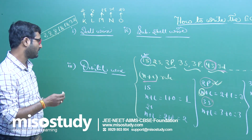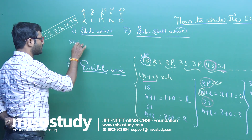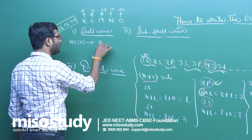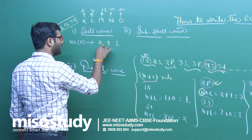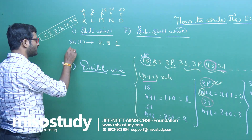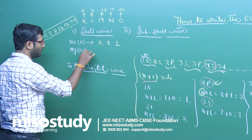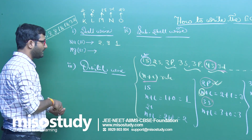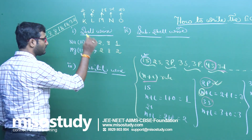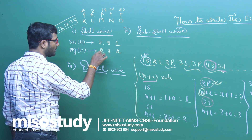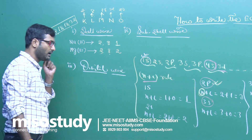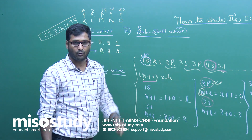Now cell-wise, if anyone asks you to write the electronic configuration of sodium: K has 2, then L maximum 8, then 1. That is 2+8=10, 10+1=11 — complete. Next, magnesium: that is 2, 8, 2. Do not write 2, 9 or 3. K can occupy a maximum of 2 electrons; it cannot occupy more than 2.